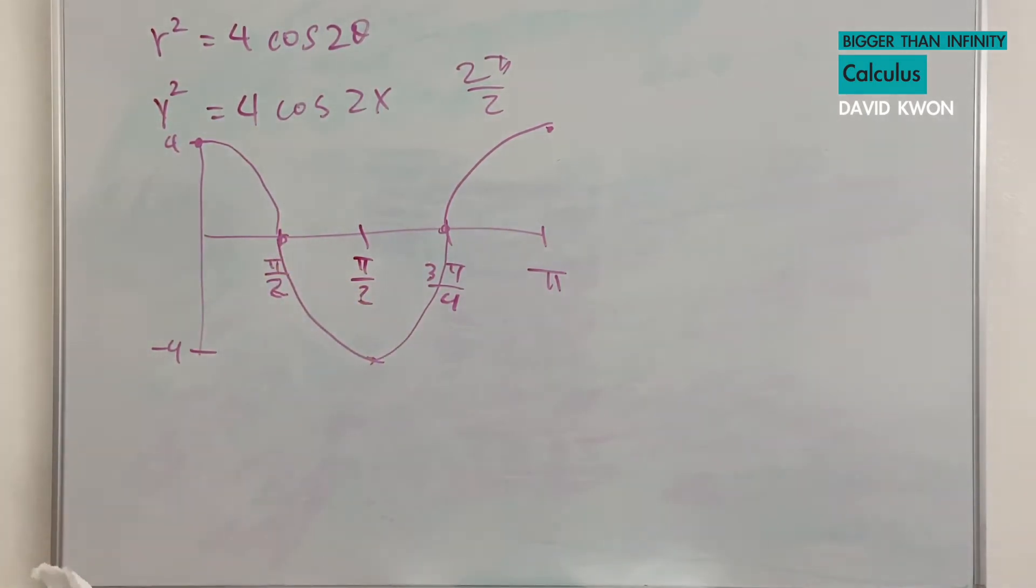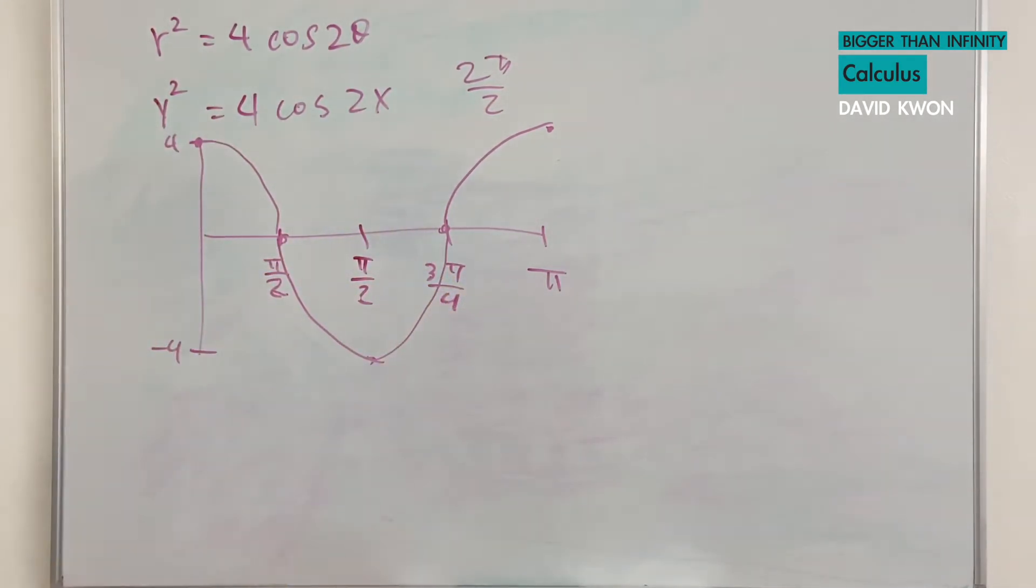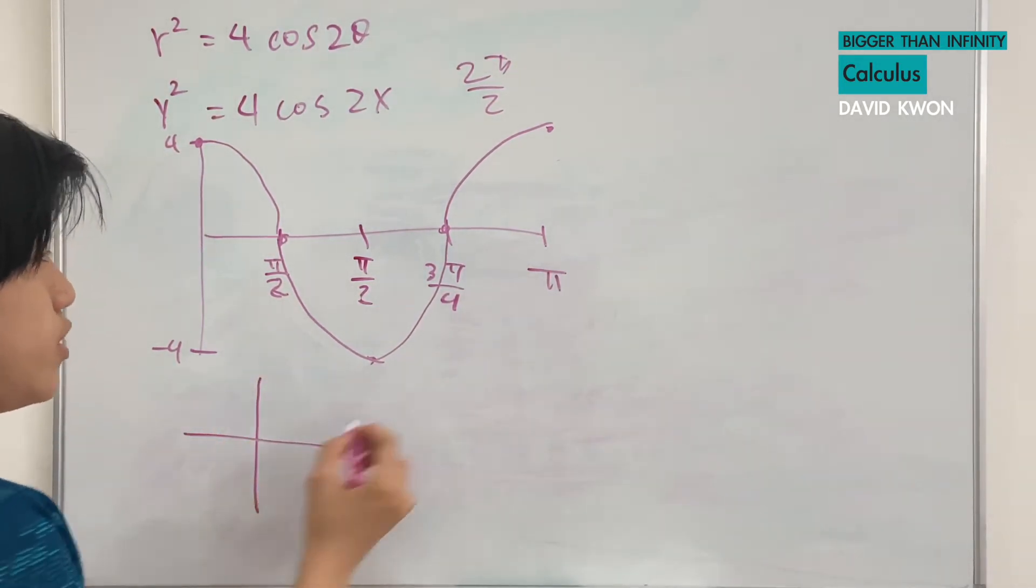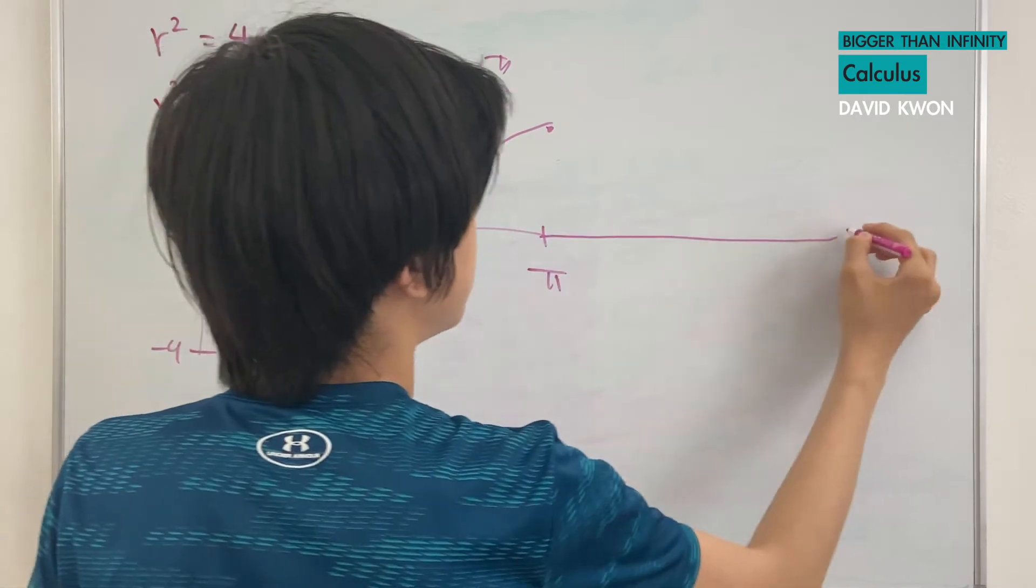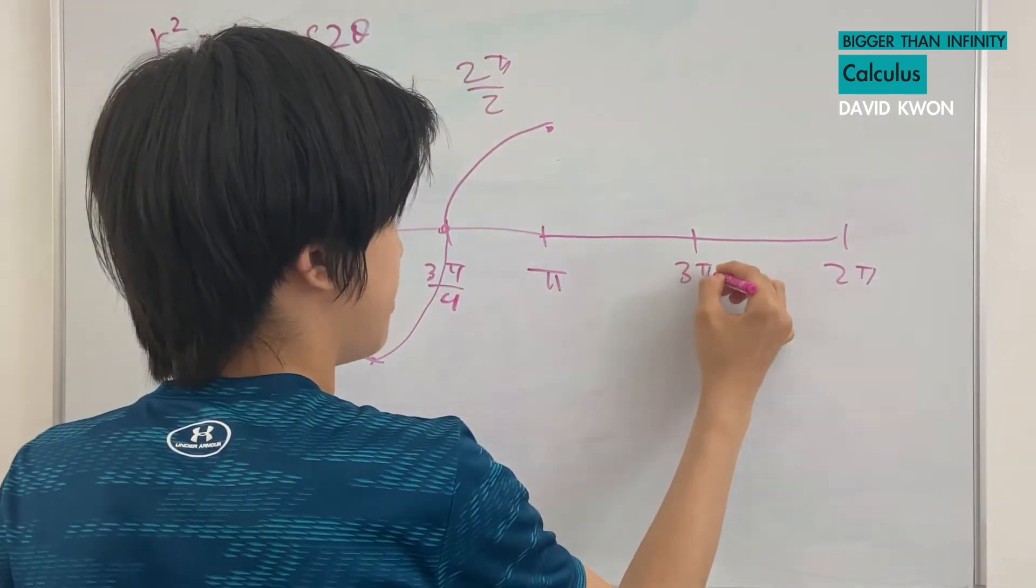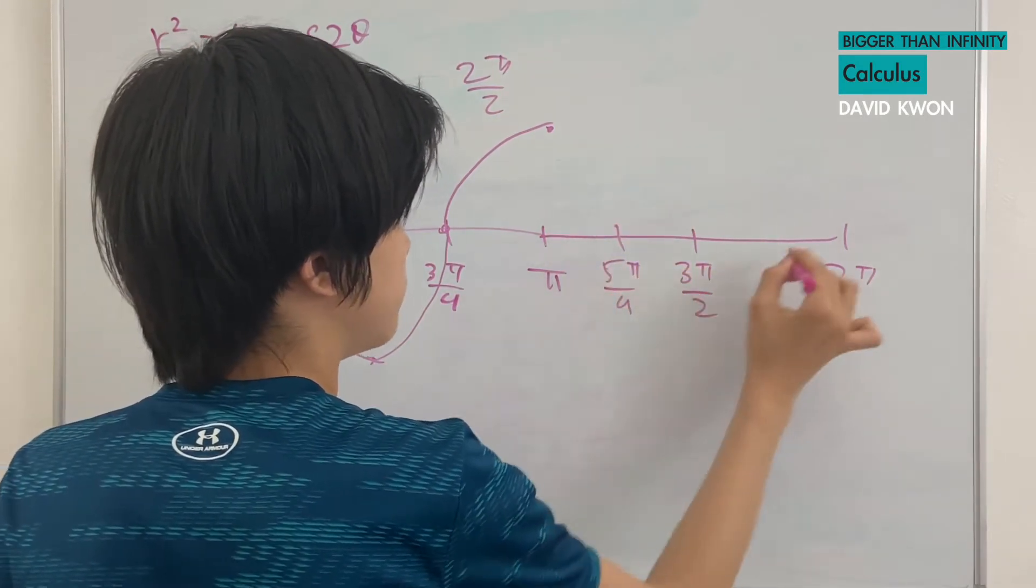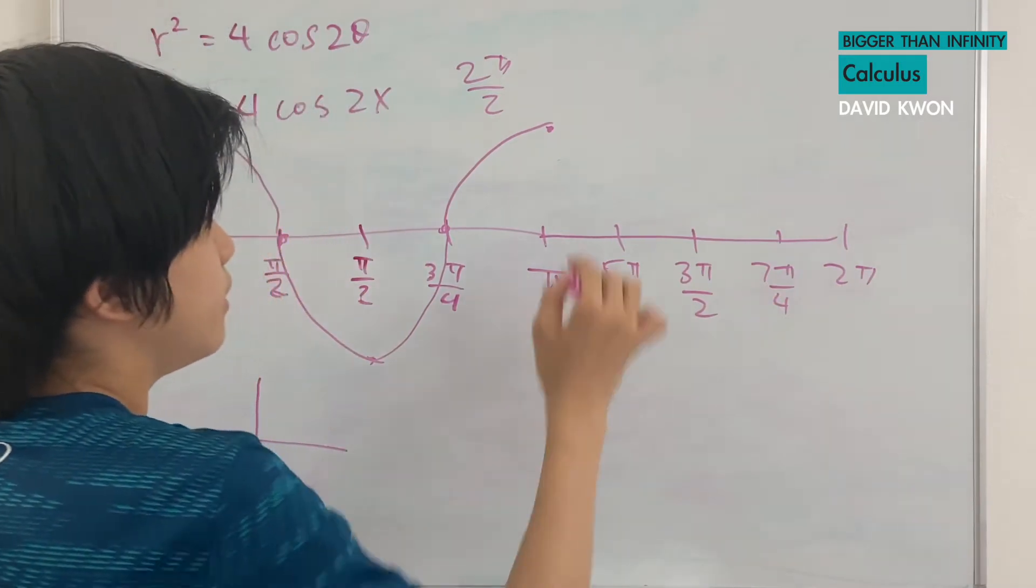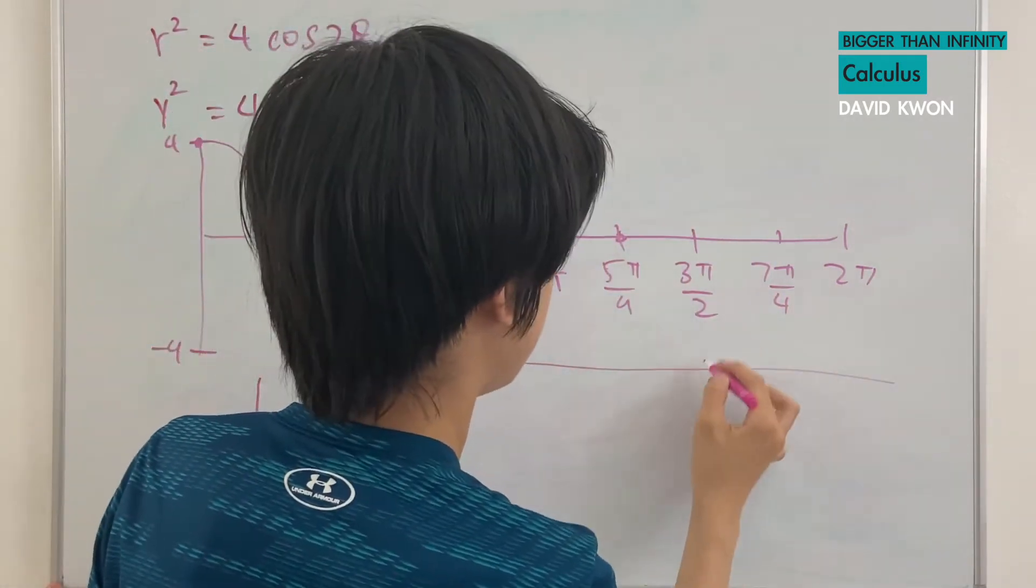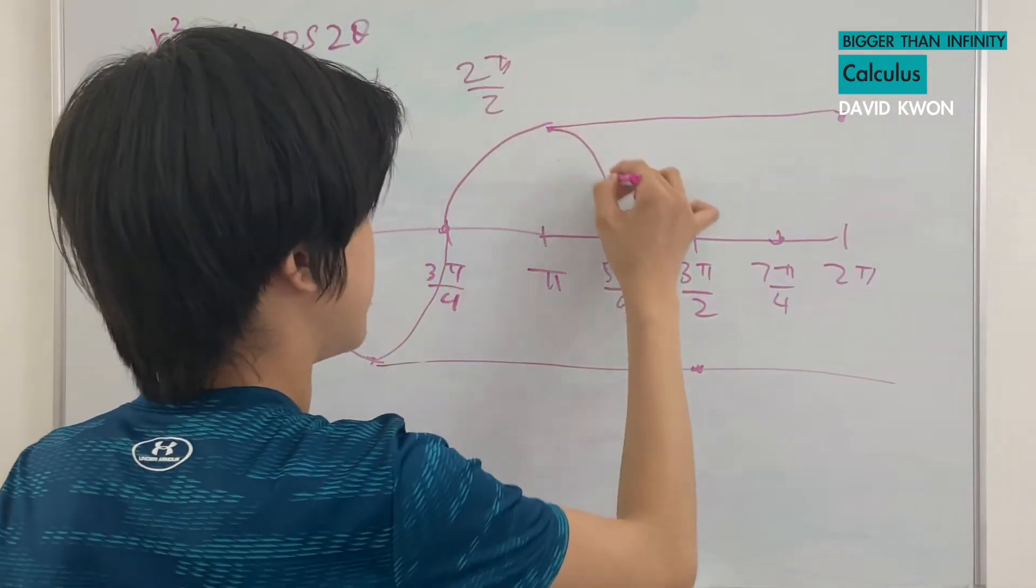And now, we have this, but to actually graph it, where we have the in terms of polar graph, right? We actually need the all the way from 2π. And this is going to be 3π over 2. This is going to be 5π over 4, and this is going to be 7π over 4. And repeating the pattern, we will get this.